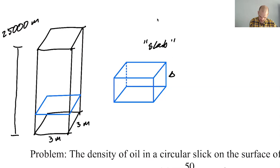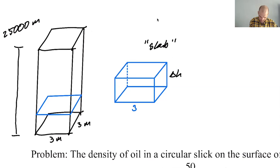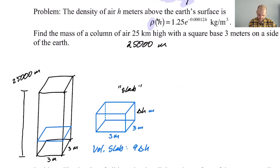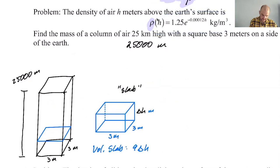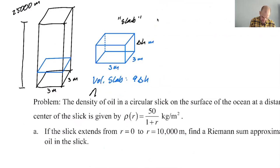And this slab, let's just say this is delta H, because we're going to cut up the height. So we'll call it delta H and this is three by three. So then the volume of a slab is nine delta H. And what are the units on that? Well, this is meters. This is meters. This is meters. It's nine delta H meters cubed. That's good because meters cubed goes along with our density function. So the number of kilograms of air that are in this slab, so air in slab, is going to be nine delta H rho of H sub I, not just H, H sub I.